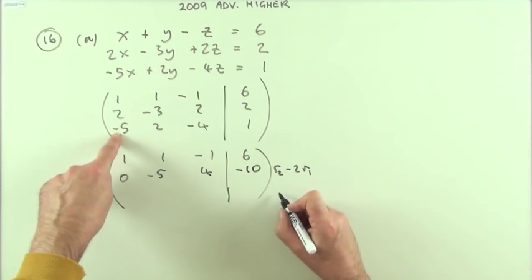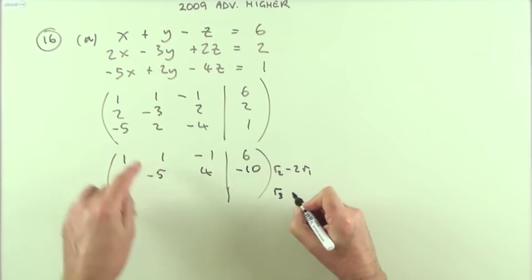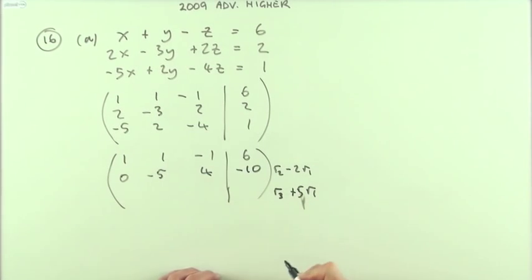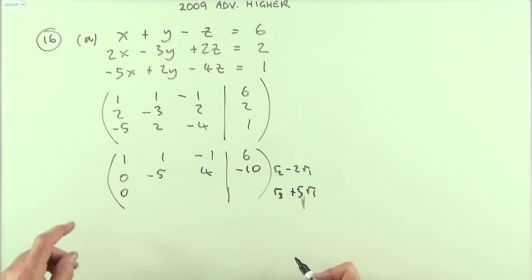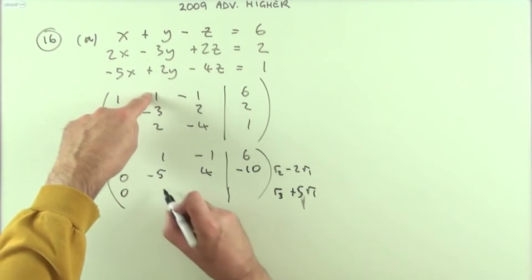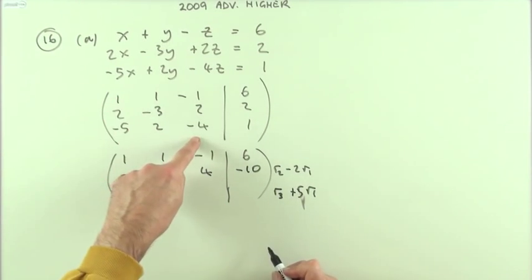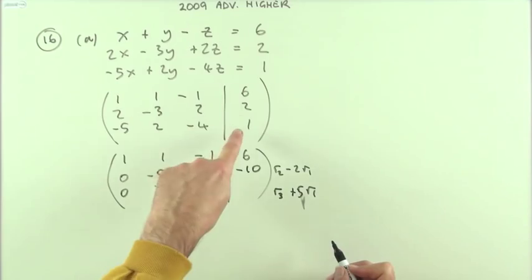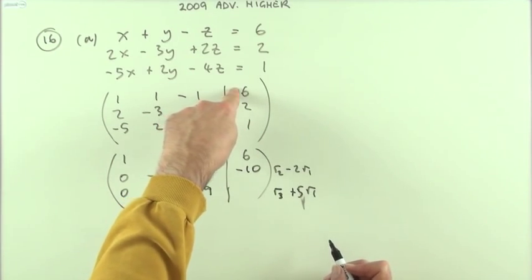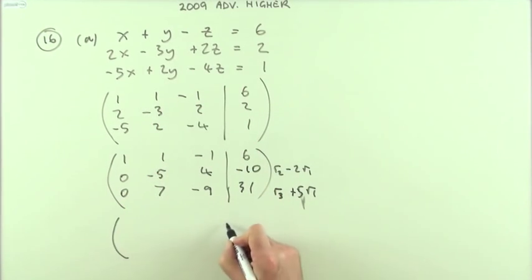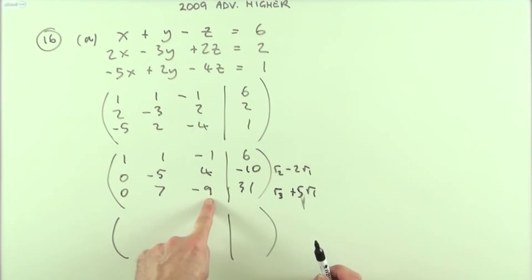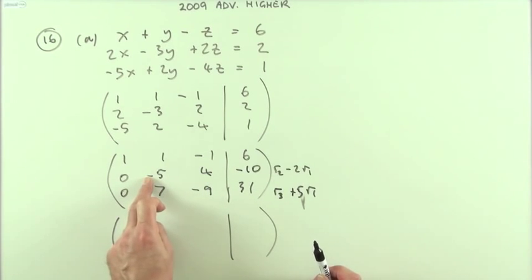To make that element zero, add five lots of row one to row three. Two plus five makes seven, negative four plus negative five makes negative nine, and one plus thirty is thirty one. Now we have those three lines. Finally, make the last lower element zero to achieve upper triangular form — then you'll have z on its own, then z with y, then z with y and x.